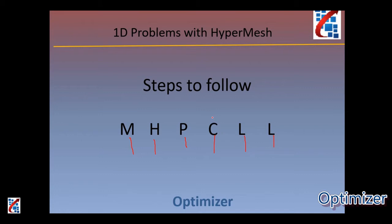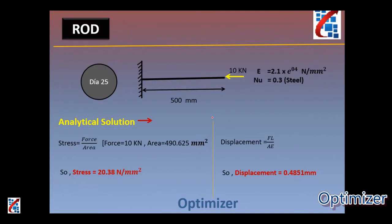In this video we are going to solve a cantilever beam problem in which a uniaxial compression force is applied. The cross-section is circular with a diameter of 25 mm. Young's modulus is 2.1×10⁴ and Poisson's ratio is 0.3. The length of the beam is 500 mm. Since a rod element is suitable only for uniaxial tension-compression problems, we will use a rod element here. Some analytical calculations have been carried out, and we will validate the HyperMesh results with them later.